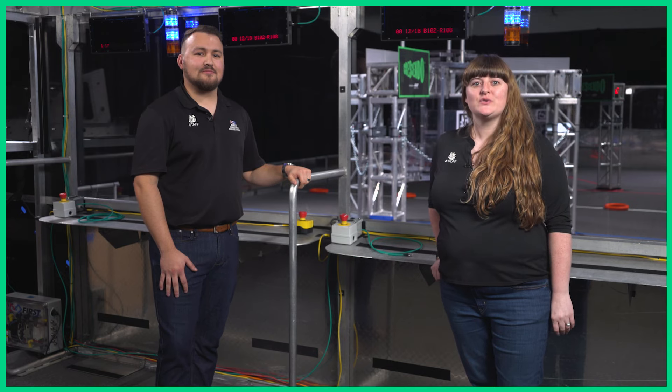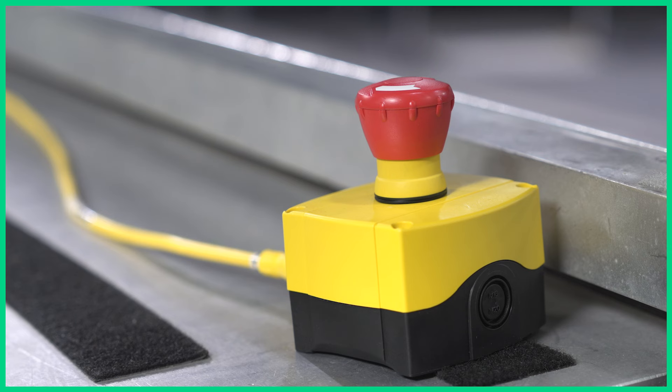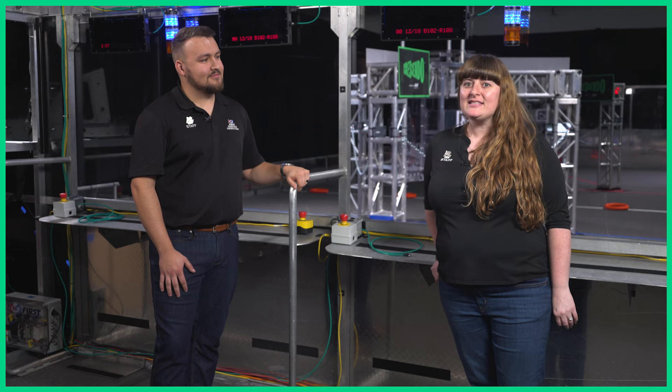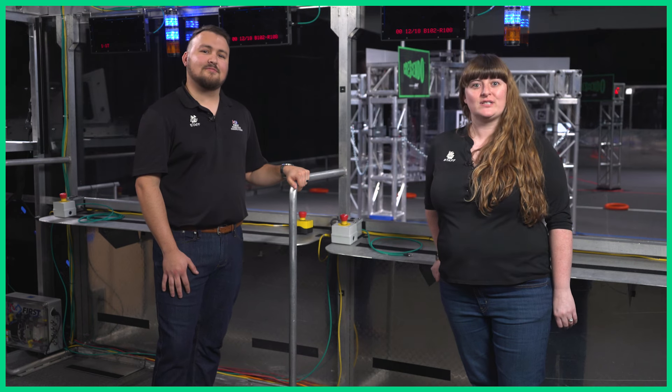This year, we're introducing an autonomous stop button, or A-stop. There's one for each driver station, and it lets you disable your robot in auto, but it's not for the whole match, like an E-stop. The A-stop means that your robot is re-enabled for teleop.